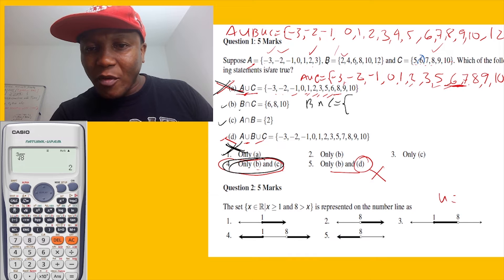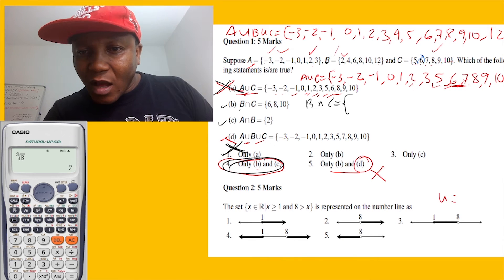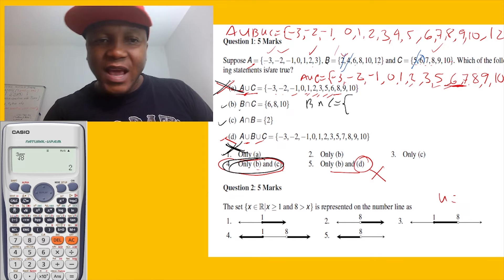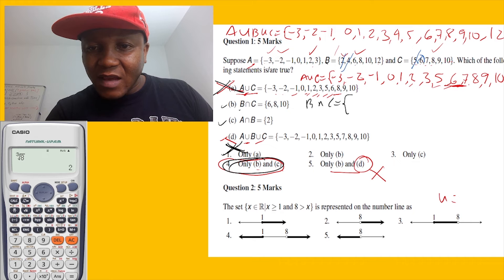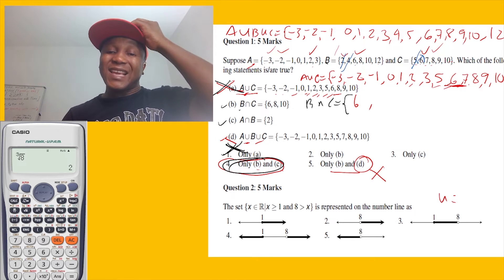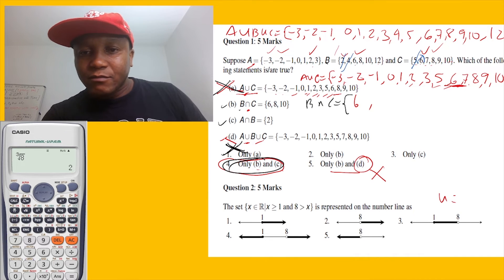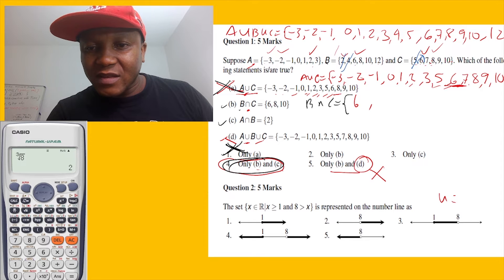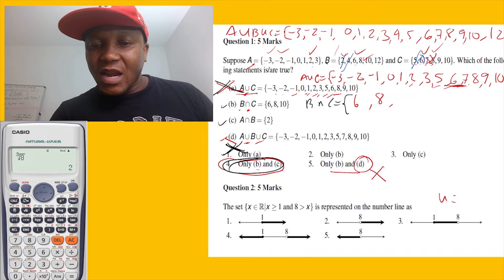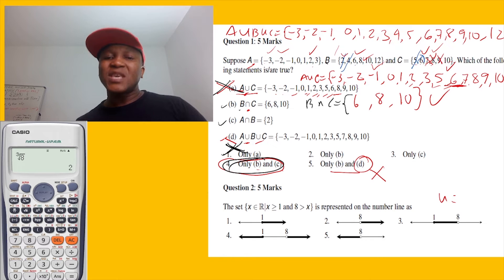Let's redo B intersection C quickly. Going through B and C: two is not common, four is not common, six — yes, six is common. Seven — no, not common. Eight — yes, common. Nine — not common. Ten — yes, common. So B intersection C equals {6, 8, 10}. Option B is true.